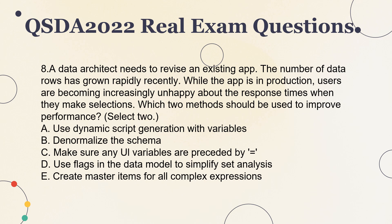Question 8. A data architect needs to revise an existing app. The number of data rows has grown rapidly recently. While the app is in production, users are becoming increasingly unhappy about the response times when they make selections. Which two methods should be used to improve performance? Select two. A. Use dynamic script generation with variables. B. Denormalize the schema. C. Make sure any variables are preceded correctly. D. Use flags in the data model to simplify set analysis. E. Create master items for all complex expressions.